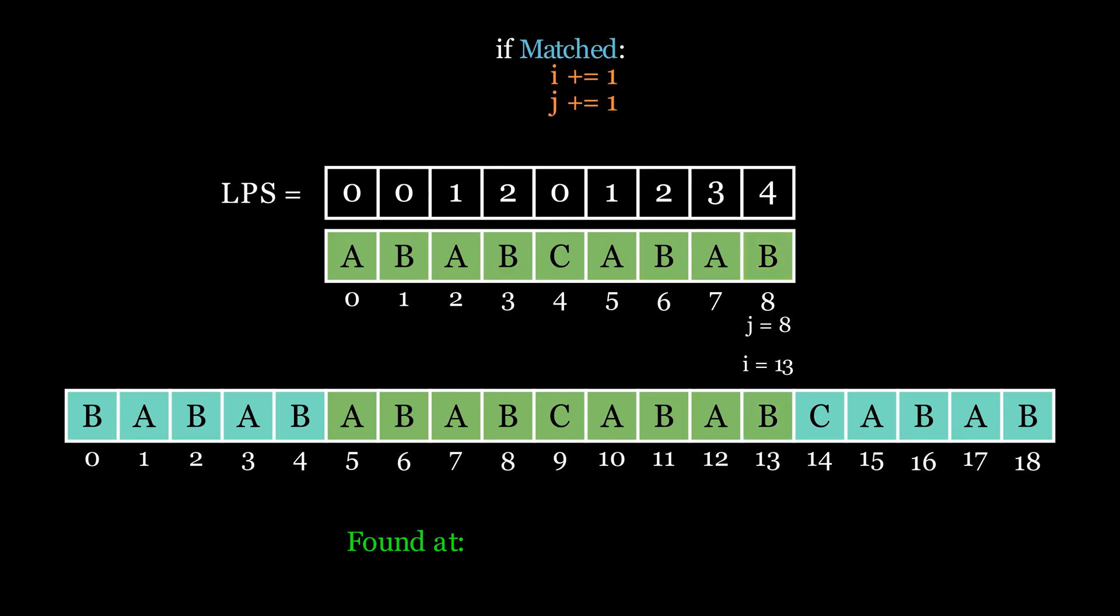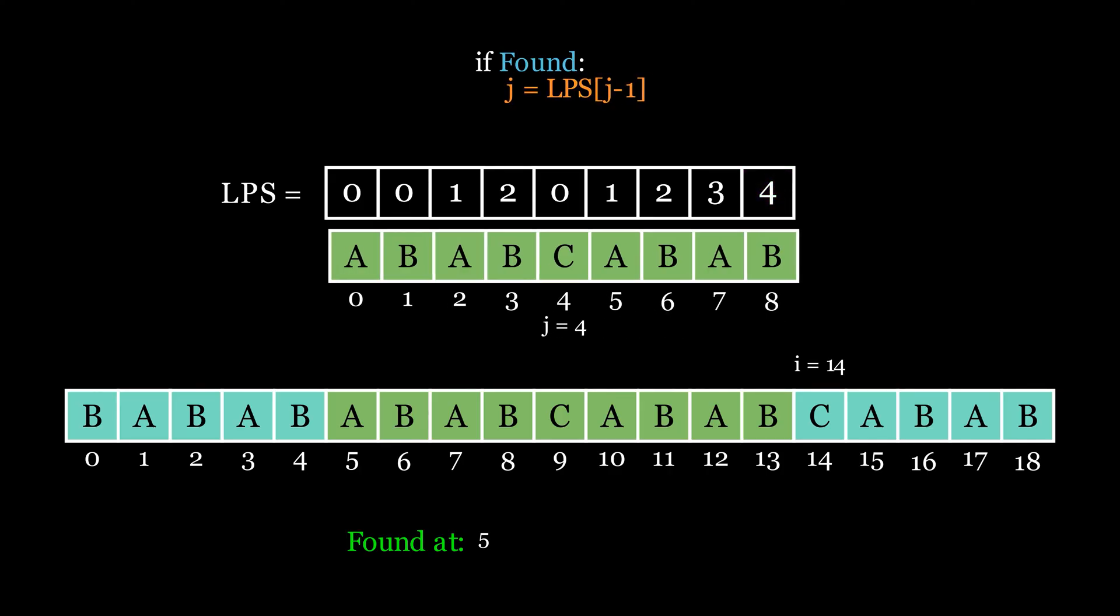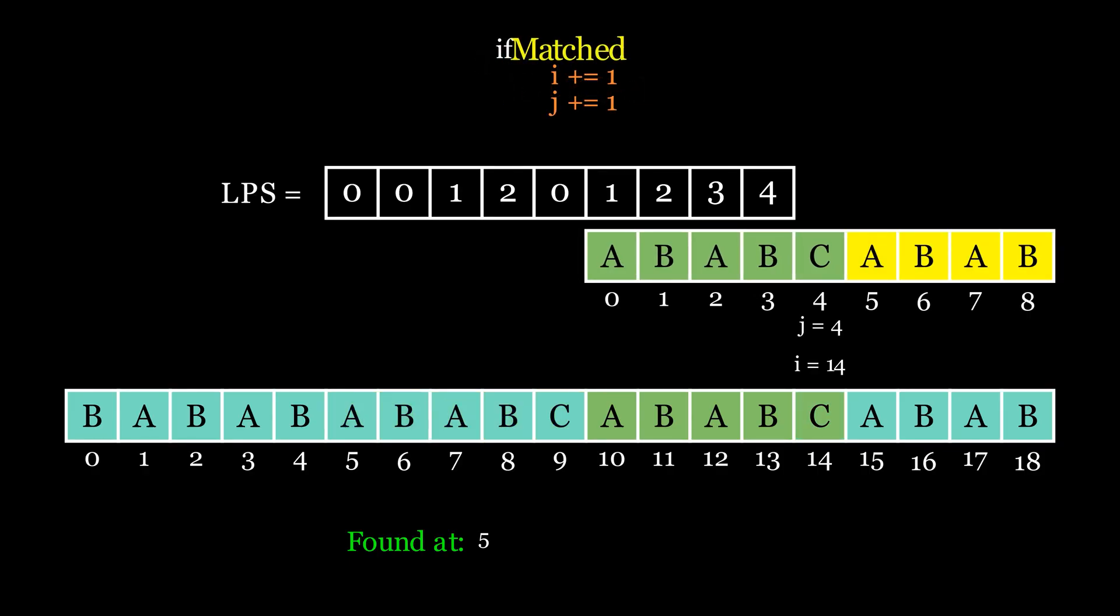And when a pattern match is found, just increment the values of i and j by 1. And note the index, and again change the value of j to the value at j minus one index of the LPS table to find further pattern matches. And repeat the same process again. When the i value reaches the end, the process will stop.